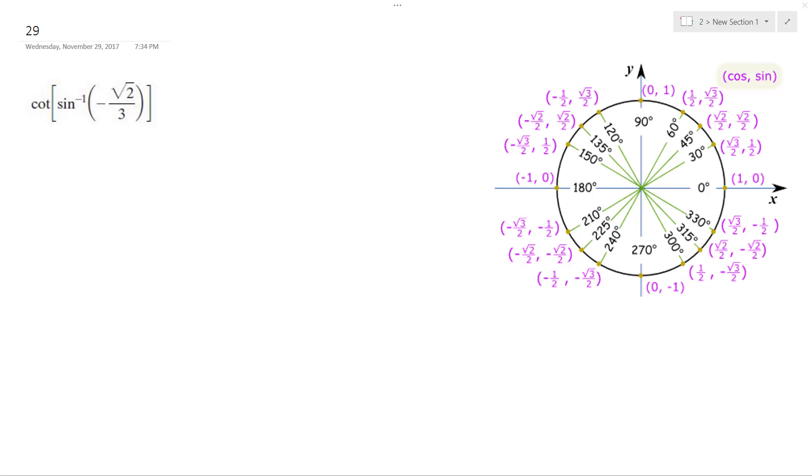All right, solving this problem, we got the cotangent of the inverse sine of negative root 2 over 3.